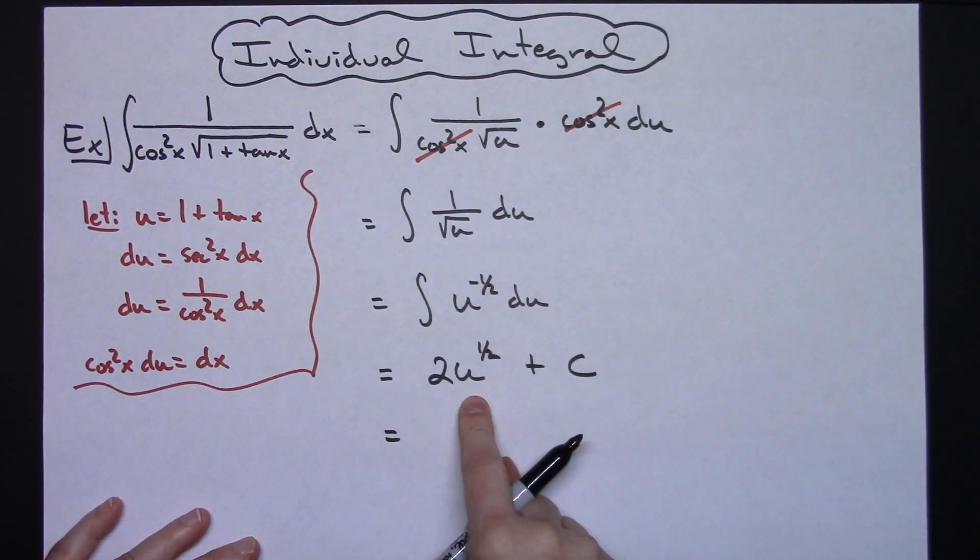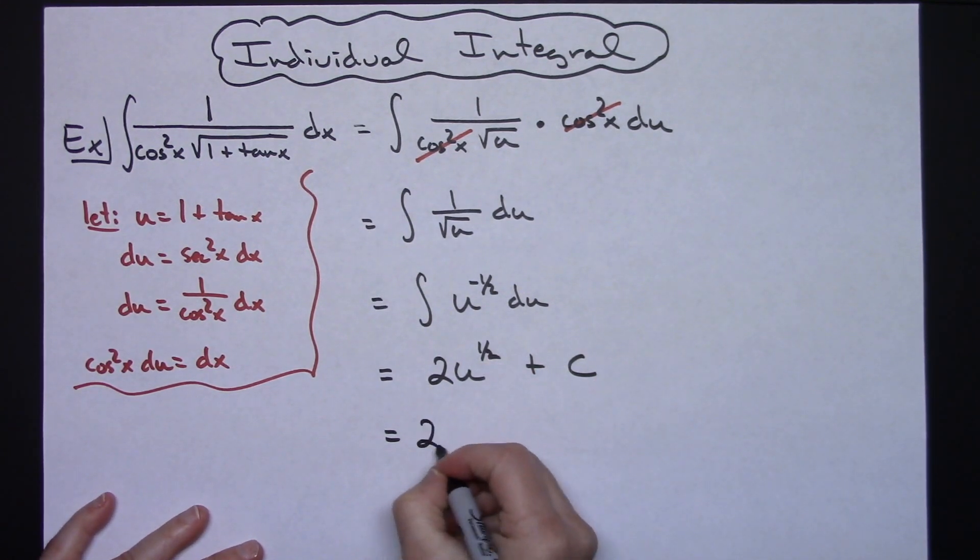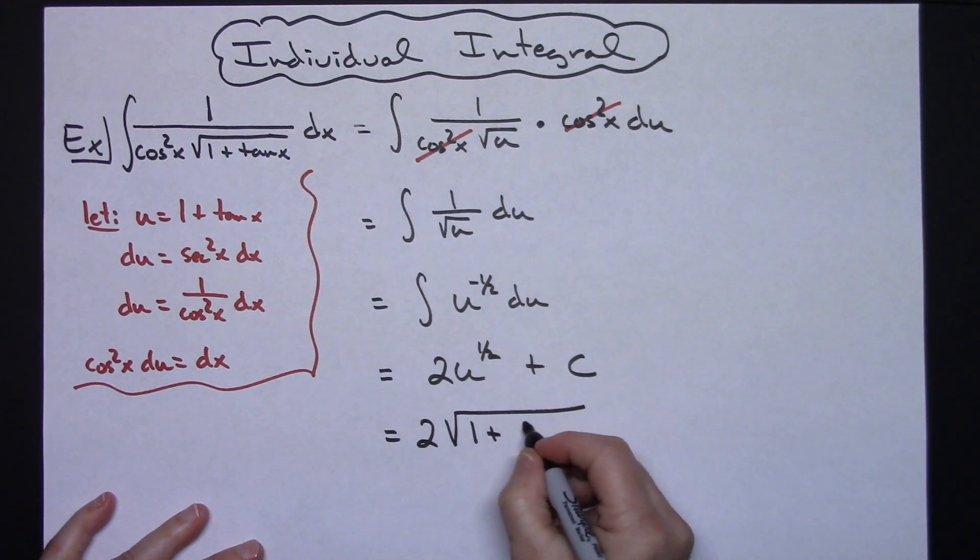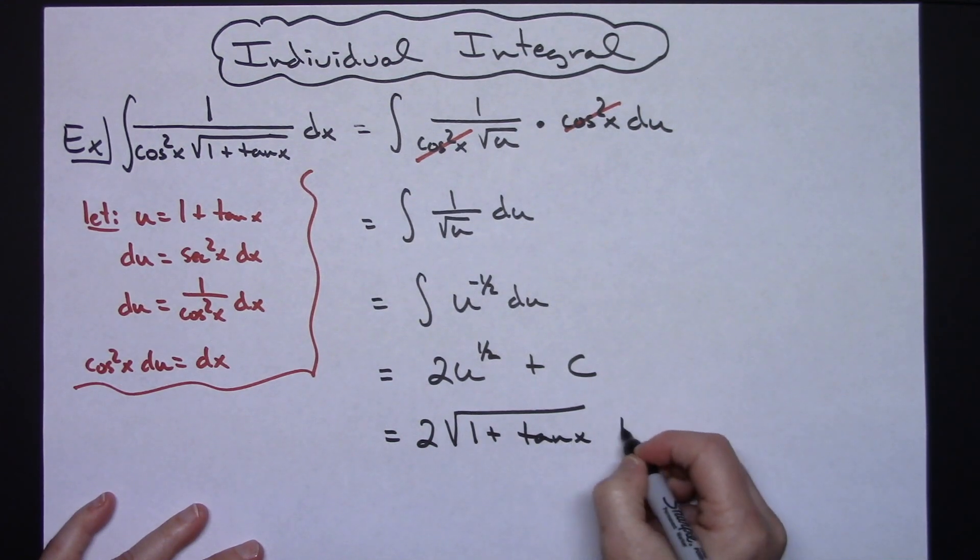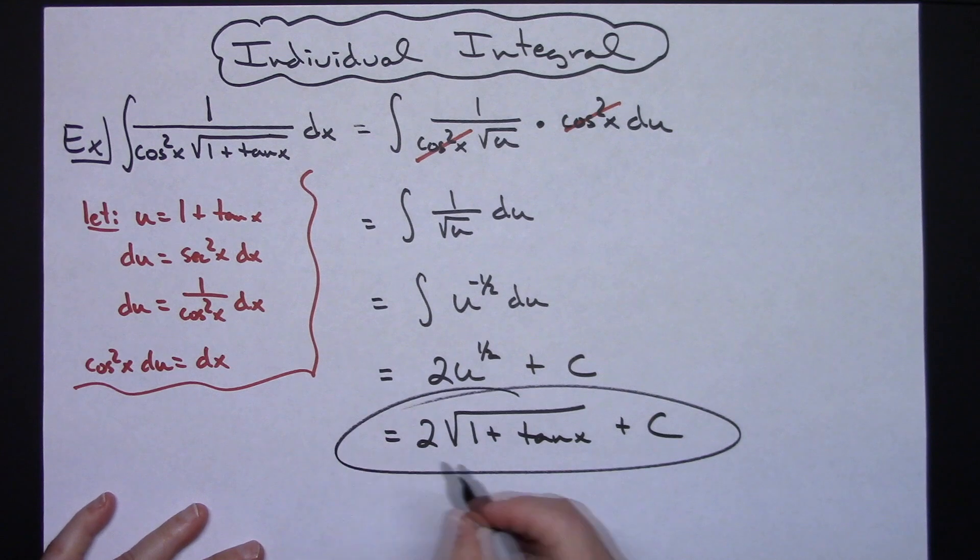Replacing u with what we said it was going to be and turning that square root back into a radical we'll have 2 square root of 1 plus tangent x plus c for a final answer.